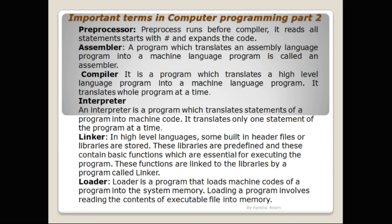What is the difference between a compiler and an interpreter? Both compiler and interpreter do the same job of converting high level language to machine code. But a compiler is faster than an interpreter. A compiler converts the code into machine code before the program runs, whereas an interpreter converts code into machine code when the program is running.